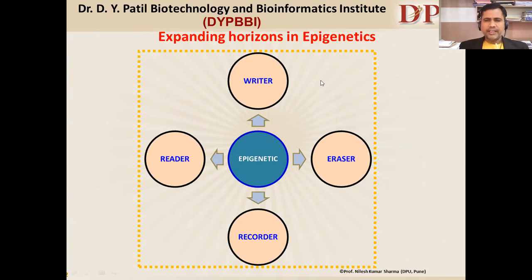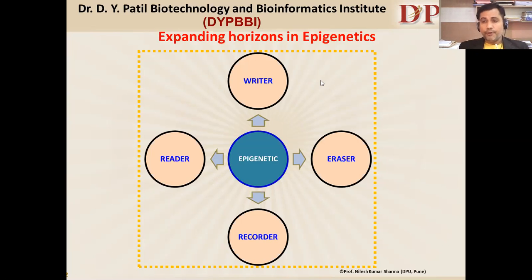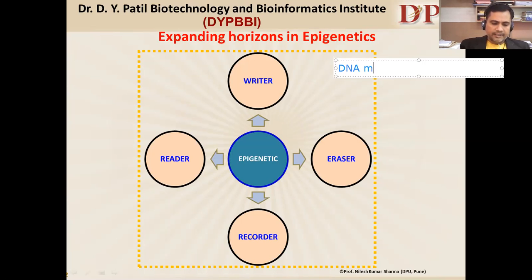Writers are a part of our cell system — they are enzymes that play an important role to write in chemical languages. Chemical languages means that the DNA or histone proteins are going to be chemically written in the form of methylation and acetylation on your histone proteins. So these can be annotated as DNA methyltransferases and histone acetyltransferases.